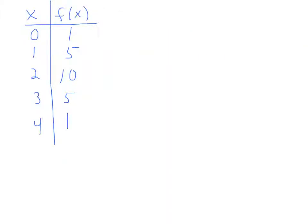Now let's see how this functional notation applies to a table of values. We're given a table of inputs — the x — and outputs, f of x. Remember, f of x is just your y values or your outputs. Let's find f of 2. The number 2 inside the parentheses is the input, so we look in the input column, find 2, and look at the corresponding output. The answer is 10.